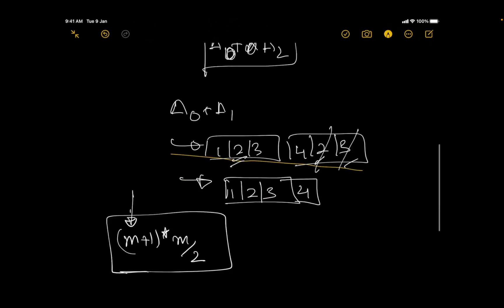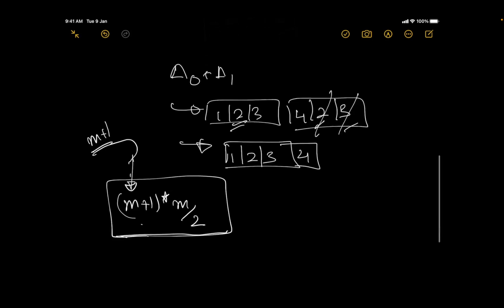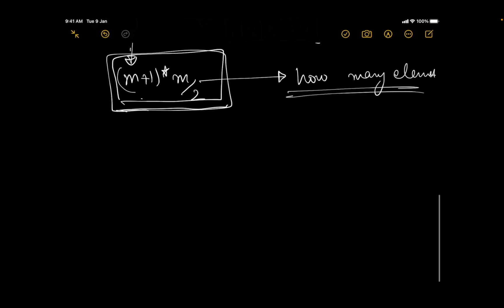The total number of array pairs we can select is (m+1)×m/2. For all these pairs we need to tell how many elements are present in total. Since we want to avoid O(n×m) or O(m^2) solutions, we need a smarter approach.